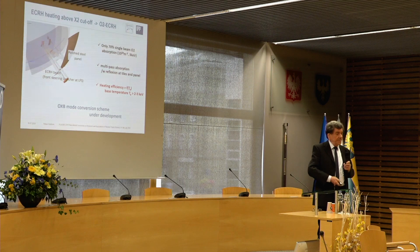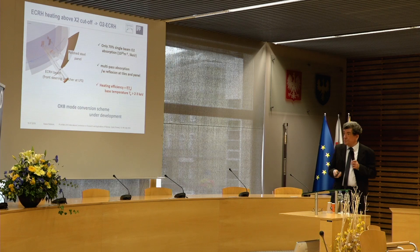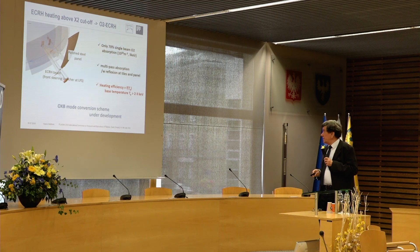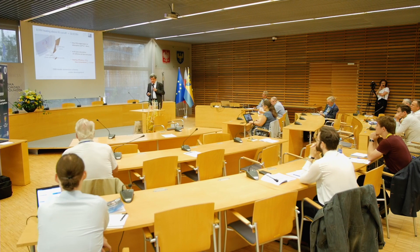O-mode heating has a problem: the heating efficiency is only 70% for a single pass through the plasma, meaning we have to send the beam several times through the plasma using mirrors — multi-pass absorption. Also, O2 heating efficiency only starts when the base electron temperature is above a certain value, around 2 keV. Above 2 keV it works quite well. Other heating methods for high density, like OXB conversion and mode conversion heating, are still under development and have not yet been studied at W7-X.